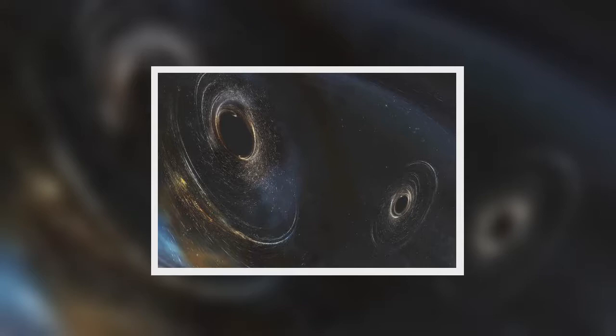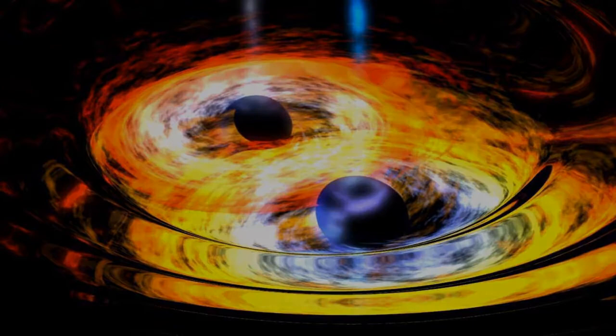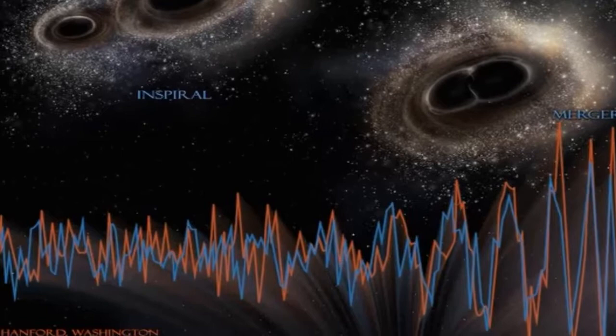LIGO first detected the signal at its Livingston, Louisiana location on September 14, 2015, then again, seven milliseconds later at a separate detector in Hanford, Washington.